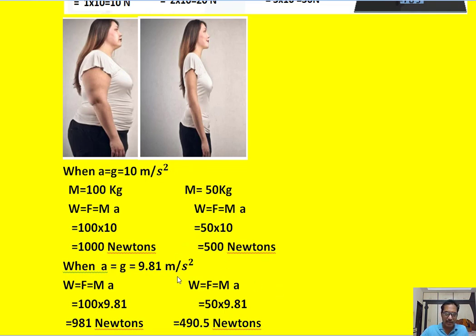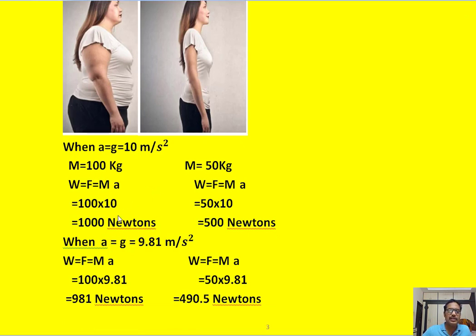Suppose we use the gravitational acceleration — the gravitational force acting on these bodies, say the humans. Then W equals F equals M into A. The mass of the fat woman is 100 kg and the gravitational acceleration acting on her is 9.81 meters per second squared. So we get 981 Newtons.